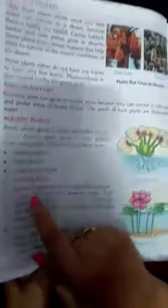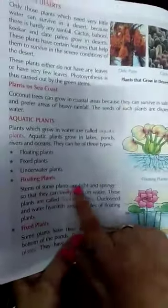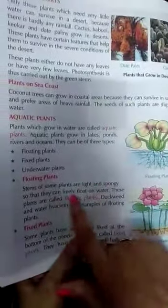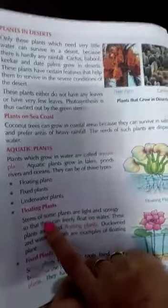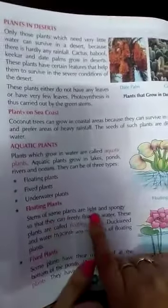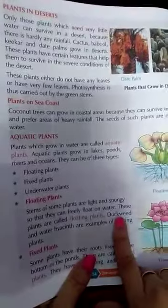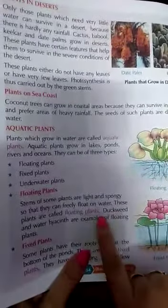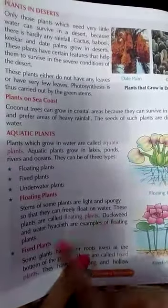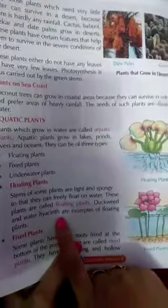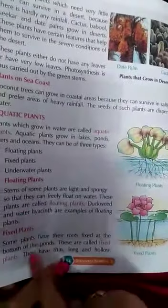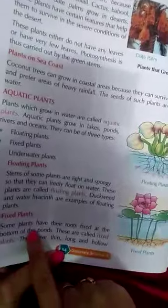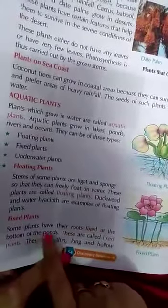Floating plants: the stems of some plants are light and spongy so they can freely float on water. Duckweed and water hyacinth are examples of floating plants.